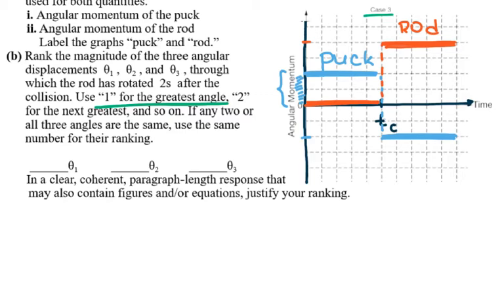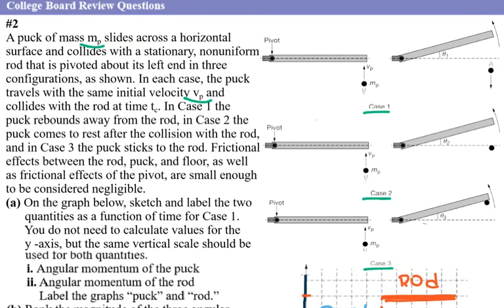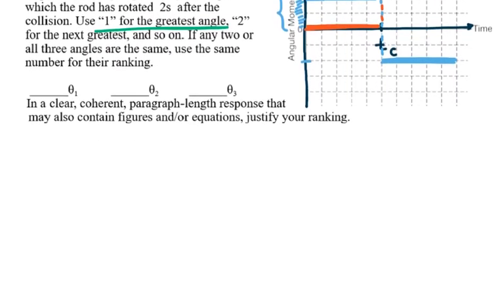The thought process is: angular momentum before equals angular momentum after. In each of these three cases you will have a different angular velocity ω for the rod, so let's rewrite the formula for each case. For Case 1, this is when the puck rebounds.